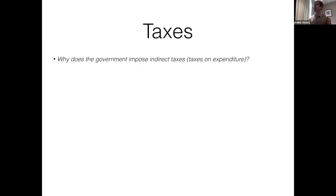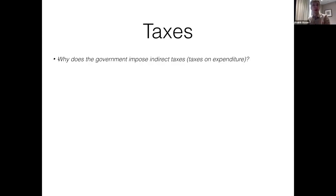Taxes come in many different forms. Today we're going to be talking about what we call indirect taxes, or taxes on expenditure. You might be aware that people have income tax as well — when people gain income the government will take a chunk of that. But specifically today we want to talk about taxes on goods, taxes on expenditure. When you go to the store and buy something you need to pay a tax on that as well. Often you don't notice that tax because it's already included in the price.